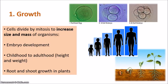Mitosis also drives general growth from childhood to adulthood — we start as a baby, become a toddler, then a child, then adolescent, then an adult, with increases in height and weight throughout. Mitosis also occurs in plants, where it produces root growth and shoot growth, which includes the stem and the leaves.